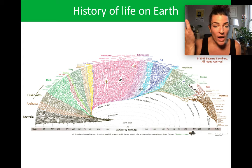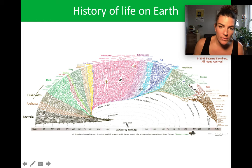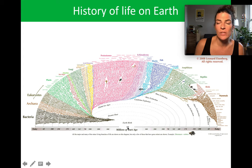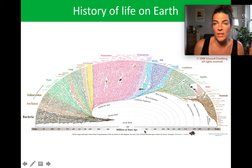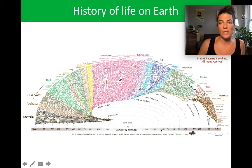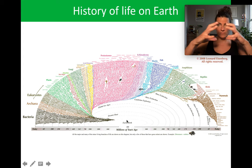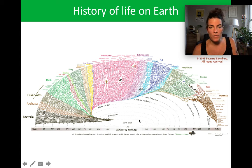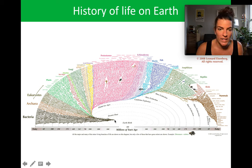Around 4.5 billion years ago is the center, and around 4 billion years ago each of these lines corresponds to an age in terms of millions of years ago. So 4,000 million years ago is 4 billion years ago, 3,000 million years ago is 3 billion years ago, etc. Going out radially from Earth birth, you have 4 billion years ago, the beginning of life right here.